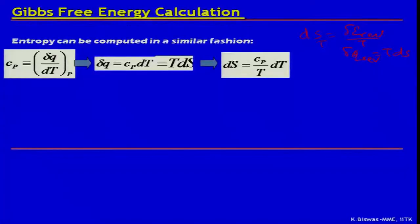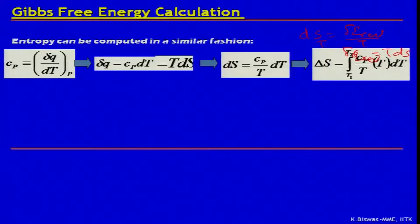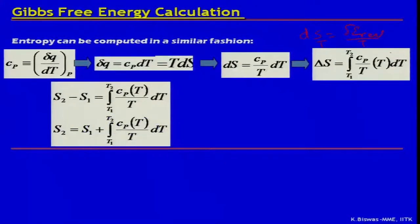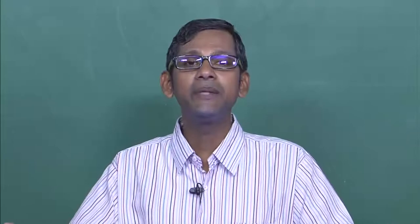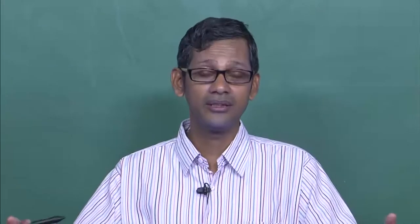Finally, entropy change equals the integral of Cp/T from T1 to T2. Again, we are interested in calculating the change, not the absolute value of entropy. The same equations apply as in the case of enthalpy. So G is a function of enthalpy and entropy for different values of temperature and pressure. When pressure is constant, it is only a function of temperature for pure materials. By knowing Cp, I can calculate both enthalpy and entropy using these simple integrals.